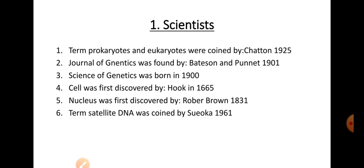In today's scientist section: the terms prokaryotes and eukaryotes were coined by Chatton in 1925. The Journal of Genetics was founded by Bateson and Punnet in 1901. The science of genetics was born in 1900. The cell was first discovered by Robert Hooke in 1665. The nucleus was first discovered by Robert Brown in 1831. The term satellite DNA was coined by Sciocca in 1961 — this is a very important question.